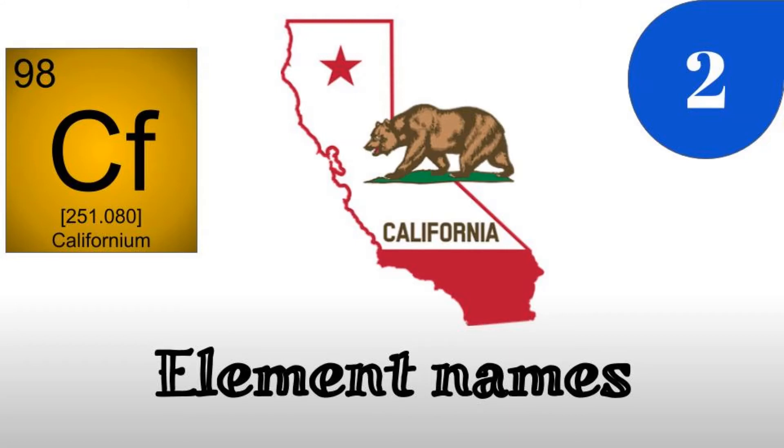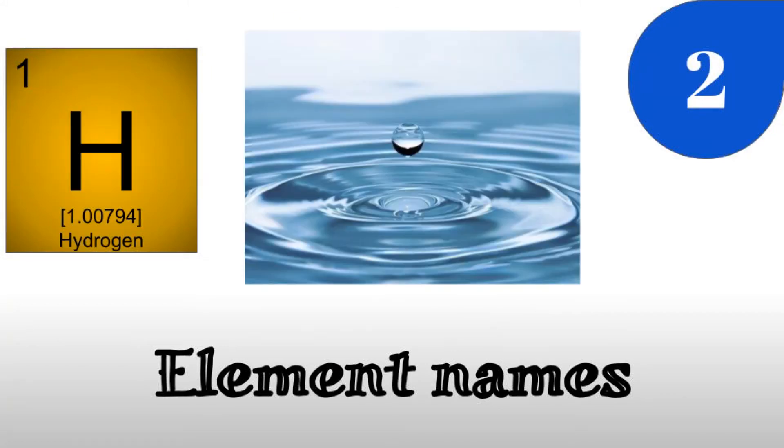Next, elements can also be named after their properties. This goes for the element hydrogen. In Greek, hydro means water and genus means creator. The combination of these words creates hydrogen or water former, because water is made up of two hydrogen atoms and one oxygen atom.